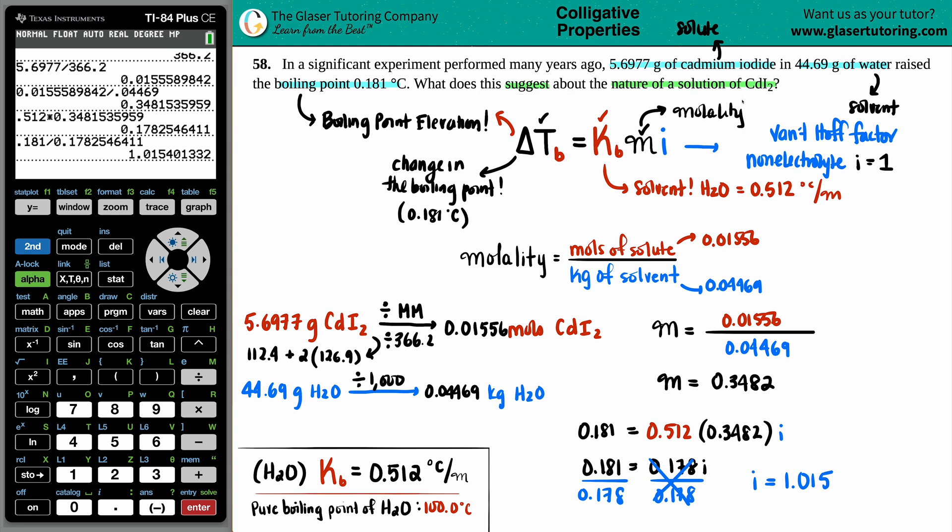So this answer, what does this suggest about the nature of the solution? This is just kind of like a theory question, but they're basically asking you to describe what's going on with this I value. So since it is close to 1, that means that CdI2 is acting as a non-electrolyte. And non-electrolytes do not dissolve. So there is very little dissociation. It's acting as a non-electrolyte, very little dissociation. It's just going to act as one whole substance in the water. And that is the answer.